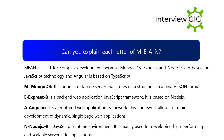Can you explain each letter of MEAN? MEAN is used for complex development because MongoDB, Express, and Node.js are based on JavaScript technology, and Angular is based on TypeScript. M — MongoDB: it is a popular database server that stores data structures in a binary JSON format. E — Express.js: it is a back-end web application JavaScript framework based on Node.js. A — Angular: it is a front-end web application framework that allows for rapid development of dynamic single-page web applications. N — Node.js: it is a JavaScript runtime environment mainly used for developing high-performing and scalable server-side applications.